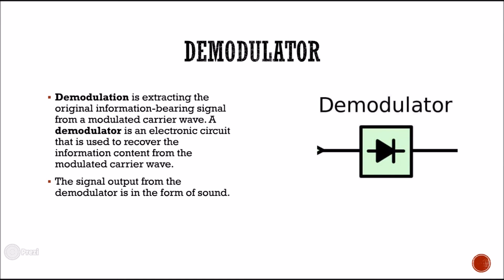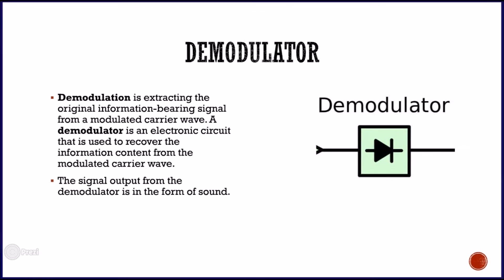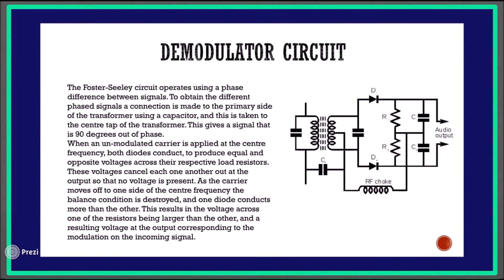Now we come to the demodulator. Demodulation is extracting the original information-bearing signal from a modulated carrier wave. A demodulator is an electronic circuit used to recover the information content from the modulated carrier wave, and the signal output from the demodulator is in the form of sound. The Foster-Sealy circuit operates using a phase difference between signals. To obtain the different phase signals, a connection is made to the primary side of the transformer using a capacitor, taken to the center tap of the transformer, giving a signal that is 90 degrees out of phase.